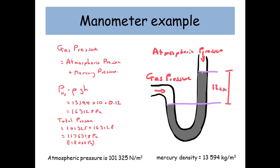So we find out that the pressure just produced by the mercury is 16,312.8 pascals. Now we need to add that to the atmospheric pressure and that will tell us the total pressure in the gas. So that total pressure is 117,637.8 or if we just round it to three significant figures, 118,000 pascals.